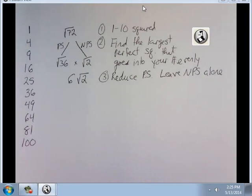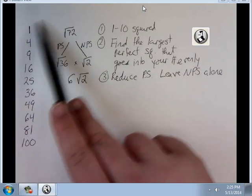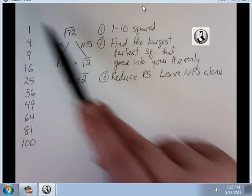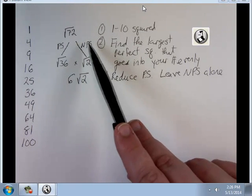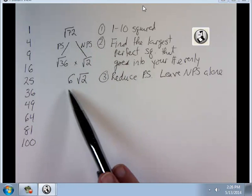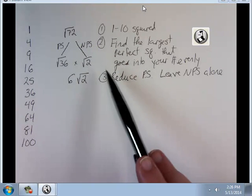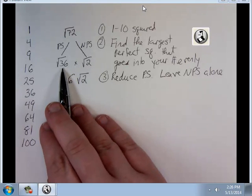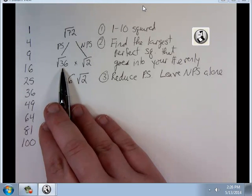All right, so let's go through the steps again, before I give you another couple practice ones. I have 1 through 10 squared written here. I want to find the largest one of these that divides evenly into 72. And the largest one that does that is 36. 36 divided by 72 is 2. Well, 72 divided by 36 is what I meant to say. 36 can reduce to 6. Square root of 2 is going to stay alone.